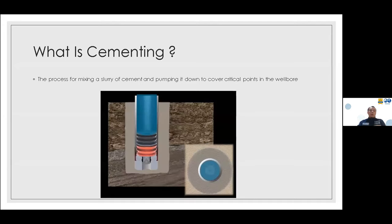Why do we need cementing for well service? When we drill a well, we make a large hole that is bigger than the casing being run. To fill the gap between the casing and the well, we put cement there. We pump cement from inside the casing, it comes out the bottom, and fills the annulus between the casing and the wellbore.